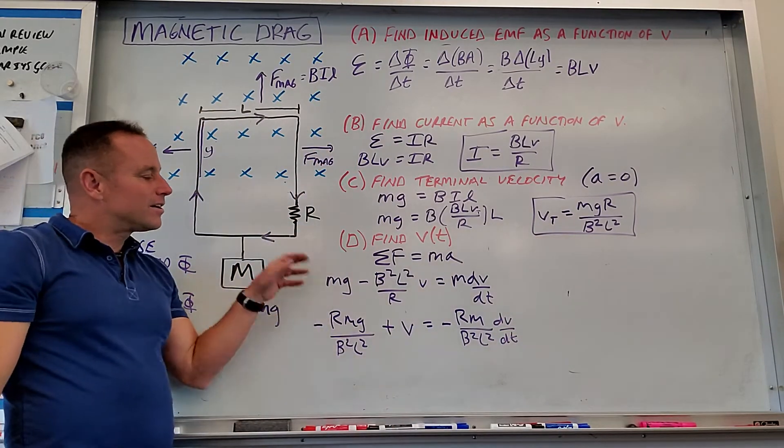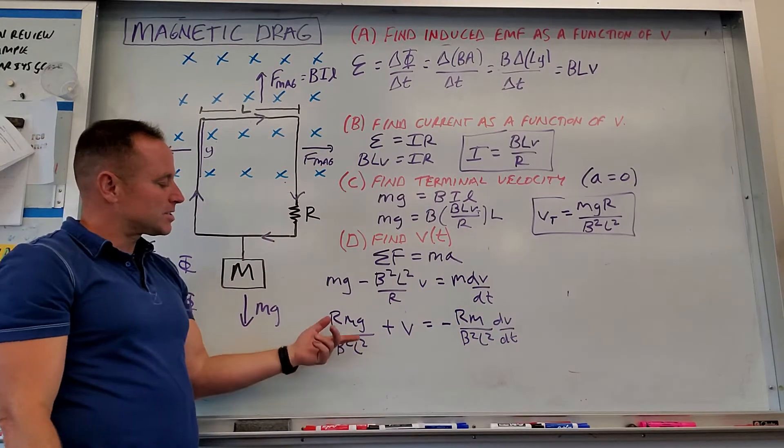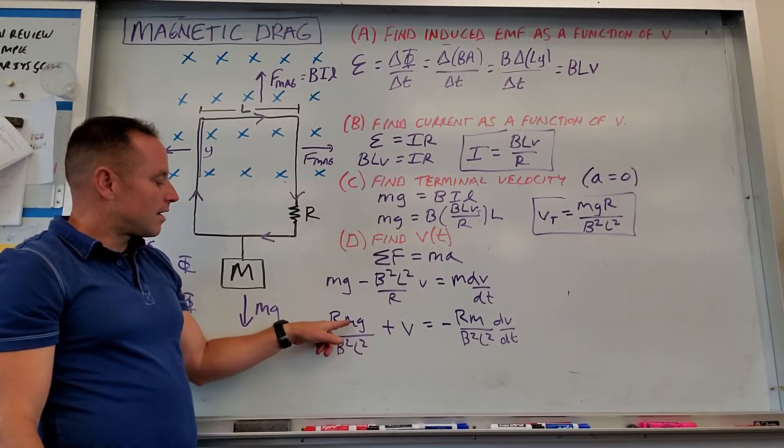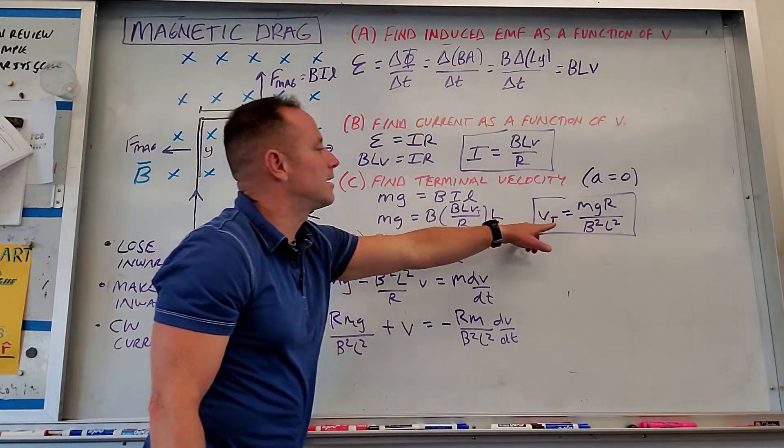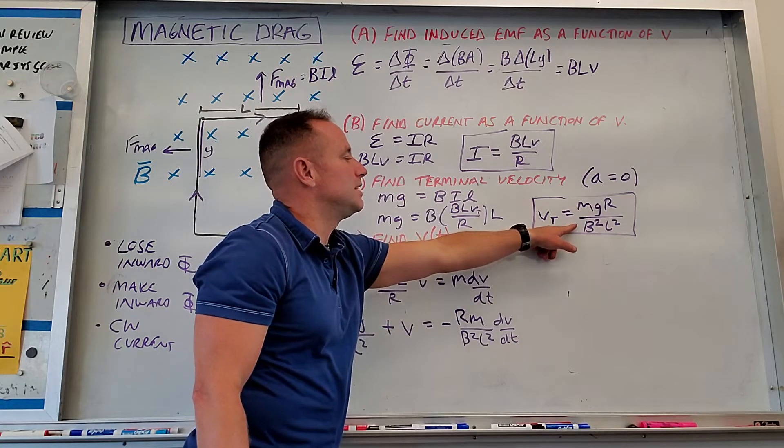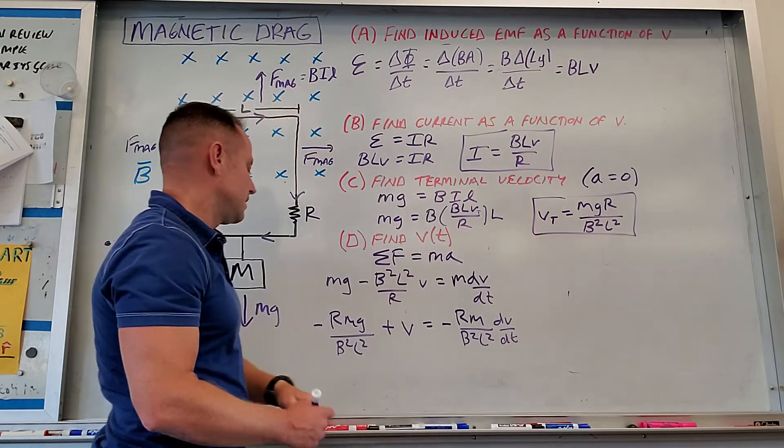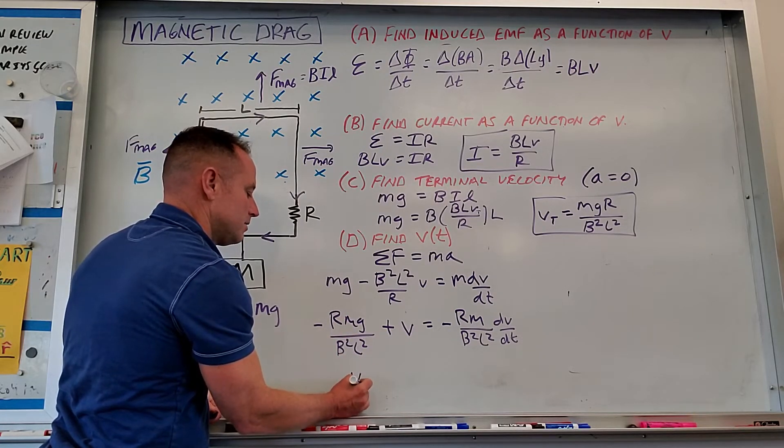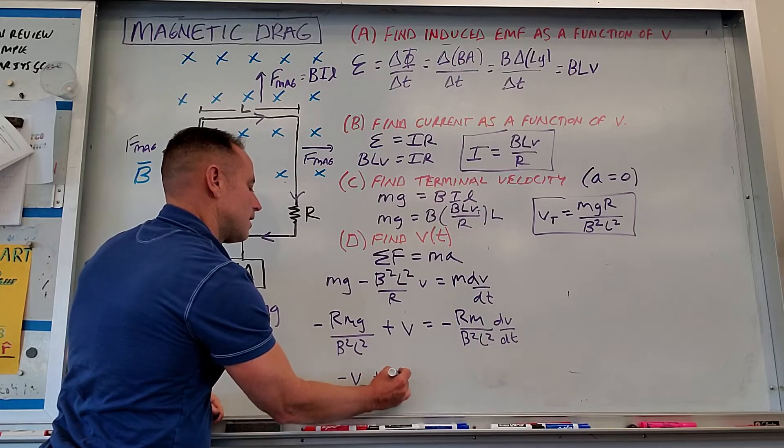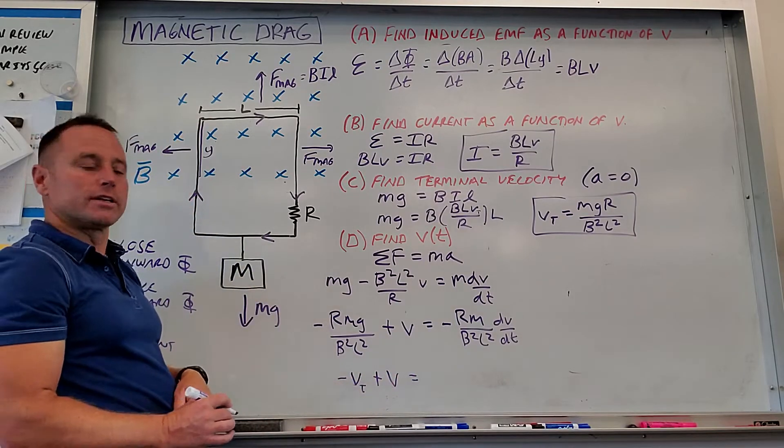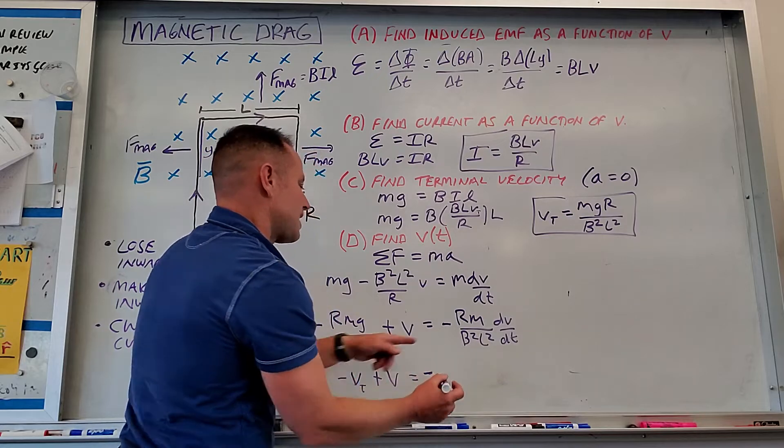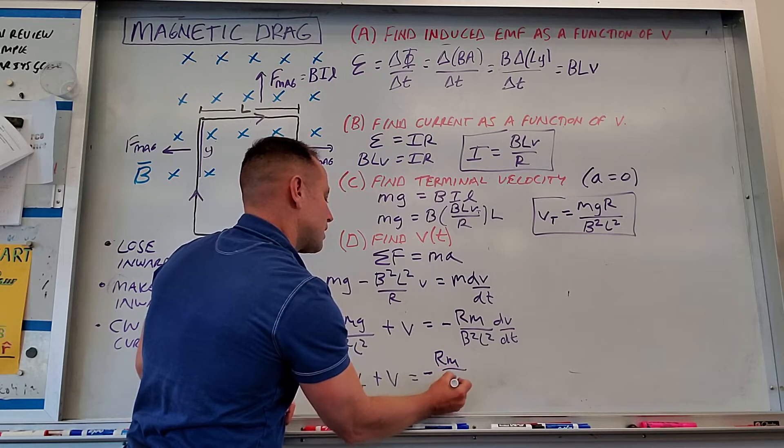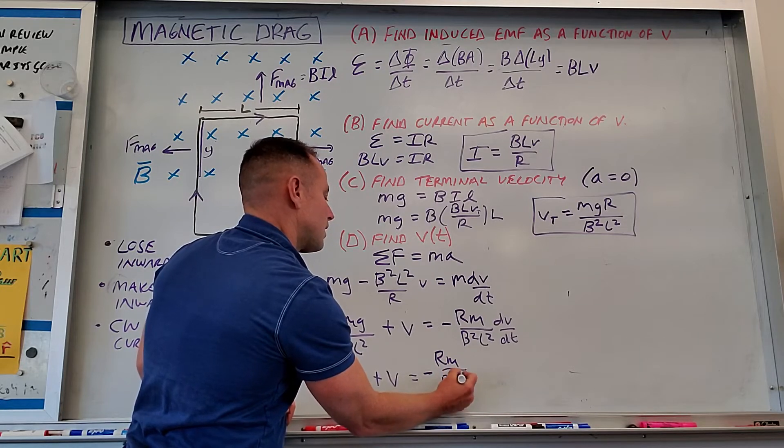Something that will make our work a little easier, less to write, is if you notice that RMG over B squared L squared, that actually is V terminal. That's the terminal velocity. So it's just less to write. This is just a clump of constants that happen to be equal to VT. So I'm just going to make that substitution. Minus VT plus V equals, and then this side I'm just going to leave it alone, RM over B squared L squared, dV/dt.